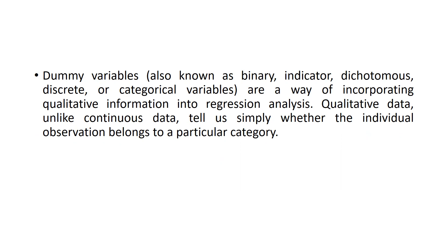That means there is gender — two categories: male and female. In the regression equation, the control variable could be male or female, so we can do a gender-wise study. Dummy variables are also known as binary, indicator, or dichotomous variables. Dichotomous means 'di' meaning two, and 'chotomous' meaning categories. Any one of these names can be used when referring to a dummy variable.